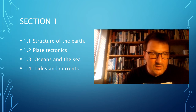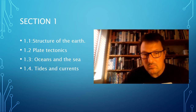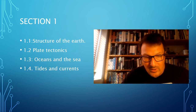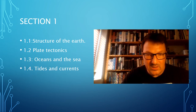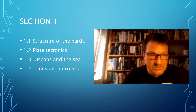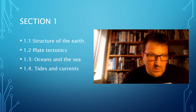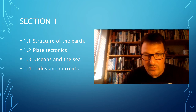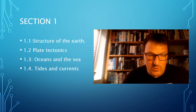1.3 is oceans and the sea, looking at the five big oceans, looking at the map, looking at the difference between oceans and seas, also describing maps and diagrams, and the geomorphological structures of the ocean.